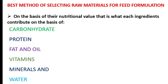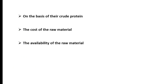For any feed to be called a quality feed — one that is expected to convert to flesh and give us the maximum weight of fish required at the end of the production cycle or during harvest — all six classes of food must be present.